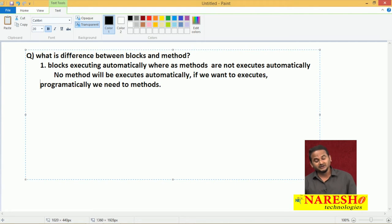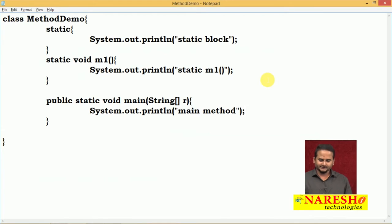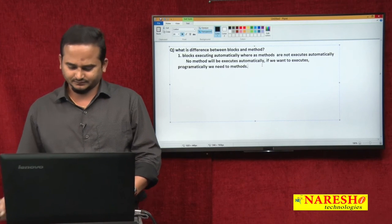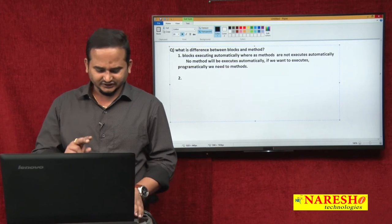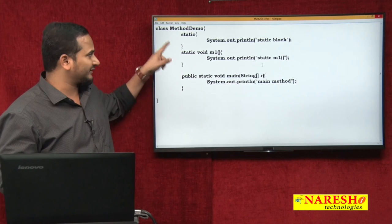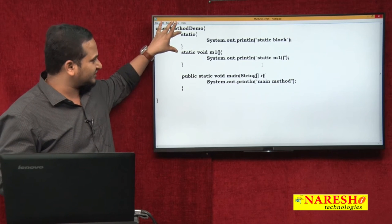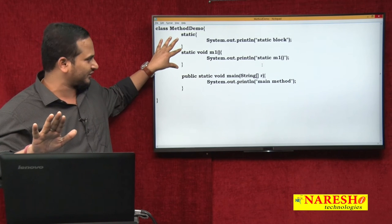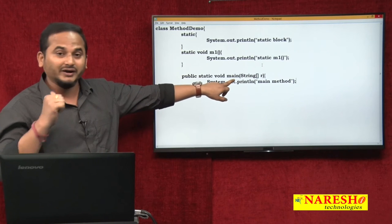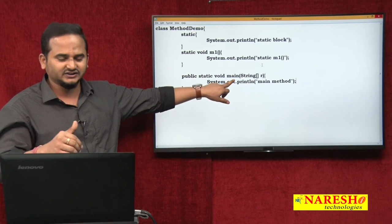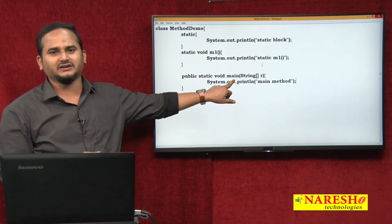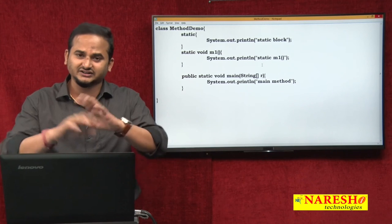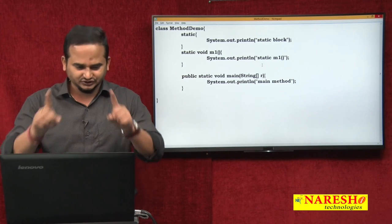Whereas blocks execute automatically. This is the first difference. The second point: blocks do not have identity, whereas methods have identity. The main method calling statement is already written in the JVM software by the Java community. That is why main method executes. Otherwise, main method also would not execute. So this is the first difference.